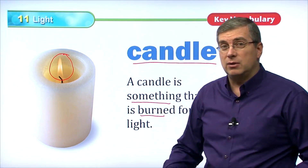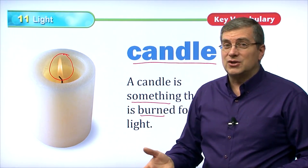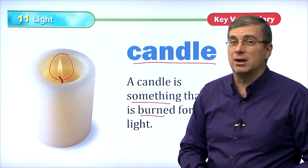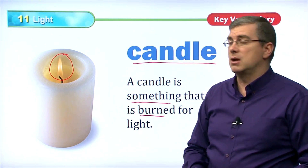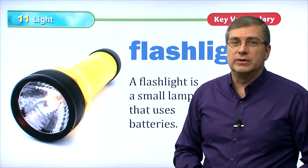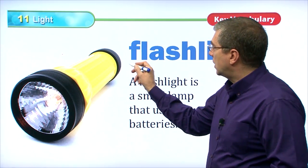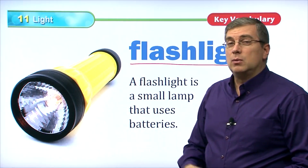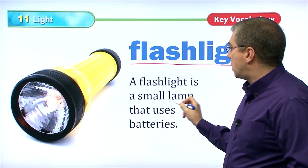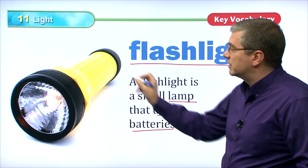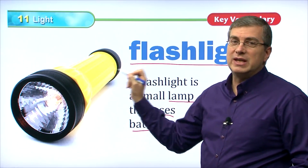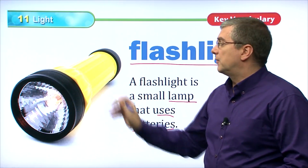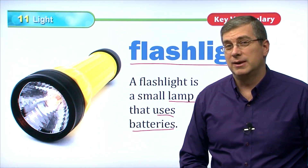If the electricity in your house goes out and you don't have a flashlight, you can light a candle to look around. But be careful, because it's burning — that's fire. It's safer, of course, to use a flashlight. A flashlight is the same idea as a candle. We use it for light, but it's a small lamp that uses batteries. It uses electricity from the batteries and we turn it on or off to get light. A flashlight is safer than a candle.